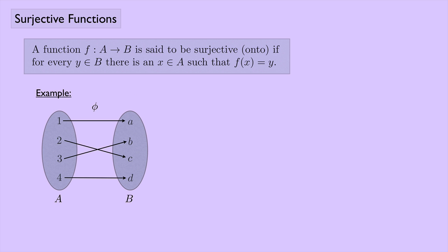Let's check against the definition — for every element y in set B. Here's set B with elements a, b, c, and d. There must be an x in set A such that phi of x equals y. Phi of 1 equals a — that works. Phi of 3 equals b — that works. Phi of 2 equals c, and phi of 4 equals d. So the function phi is indeed surjective, or onto.